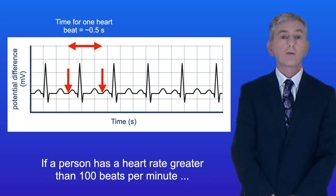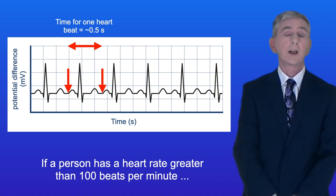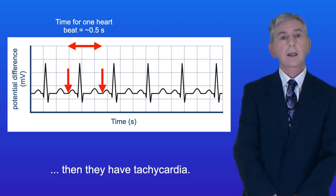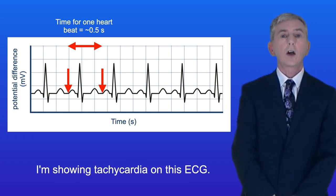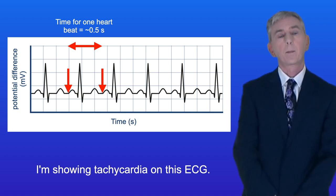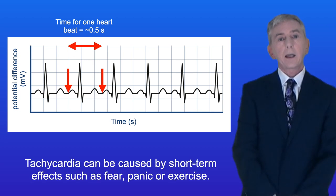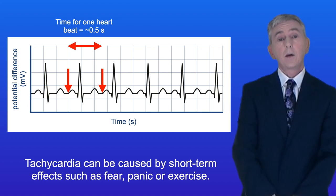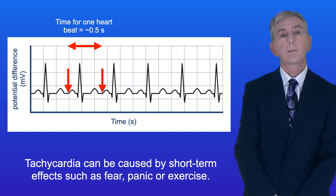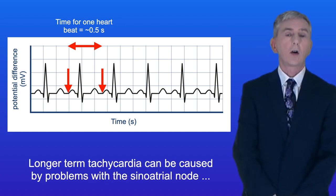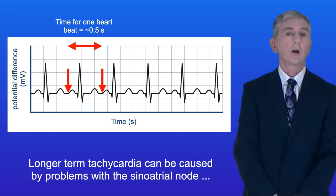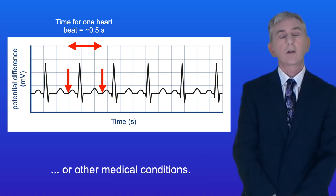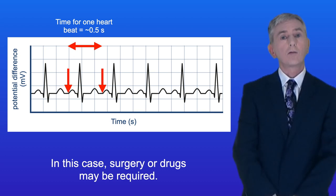If a person has a heart rate greater than 100 beats per minute then they have tachycardia, and I'm showing tachycardia on this ECG. Tachycardia can be caused by short-term effects such as fear, panic, or exercise. Longer term tachycardia can be caused by problems with the sinoatrial node or other medical conditions, and in this case surgery or drugs may be required.